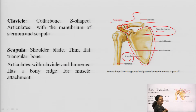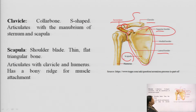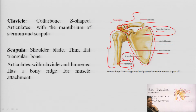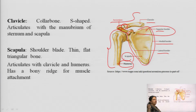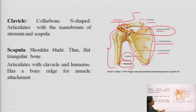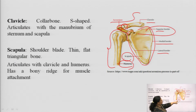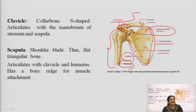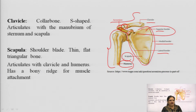The humerus is the longest bone of our hand. The clavicle is articulated with the scapulae as well as to the humerus with the help of the acromion. The clavicle is also sometimes known as the collar bone, which is roughly S-shaped, and it articulates with the manubrium of the sternum and the scapula. The scapula is the bony area of the back side of the shoulder.